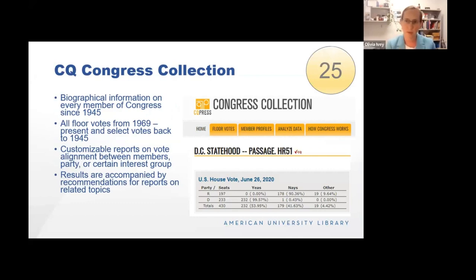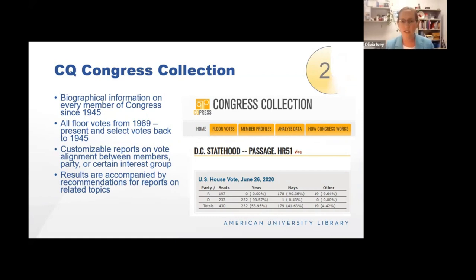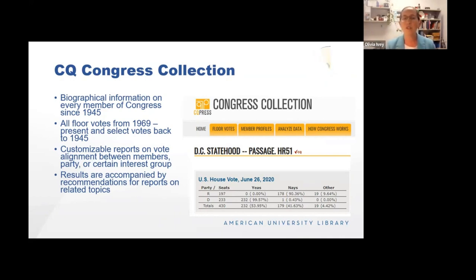We have quite a few databases published by CQ Congressional Quarterly, and I wanted to draw attention to this one specifically. You can find biographical information about every member of Congress from 1945 to the present. They have every floor vote from 1969 to the present, and they've identified key votes going back to 1945. You can create customizable reports on member alignment — finding a particular member and seeing how they vote in sync with other members from their state, from their party, or with somebody else of your choosing, as well as scores from various interest groups about how much that group thinks their votes align with their values. Shown here is the U.S. House vote on D.C.'s statehood bill from 2020.